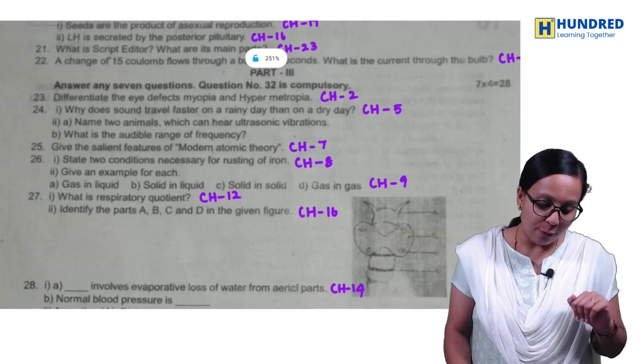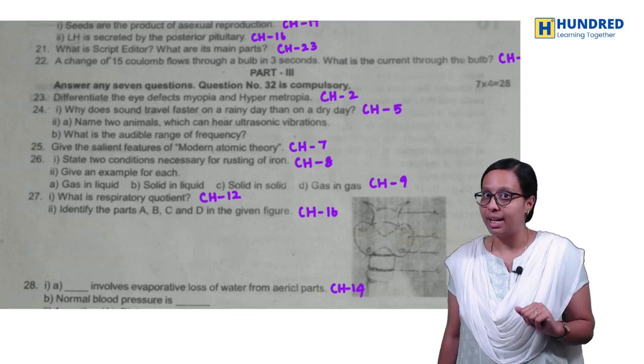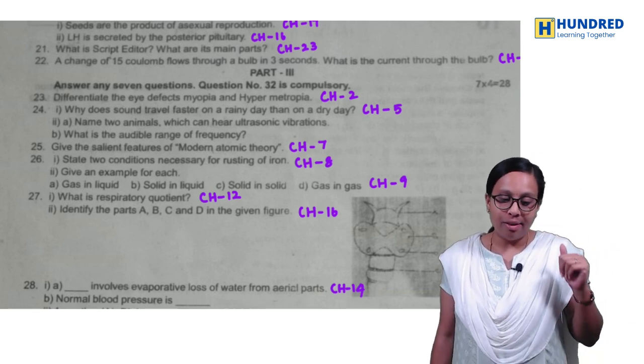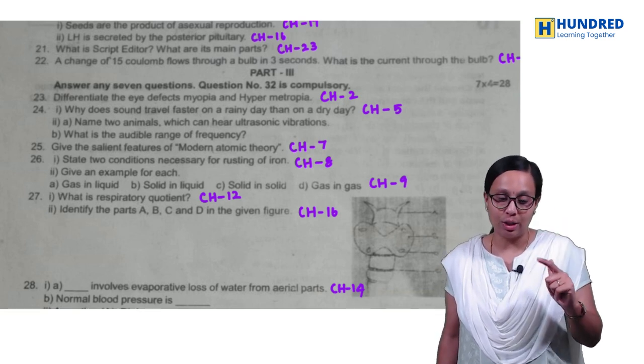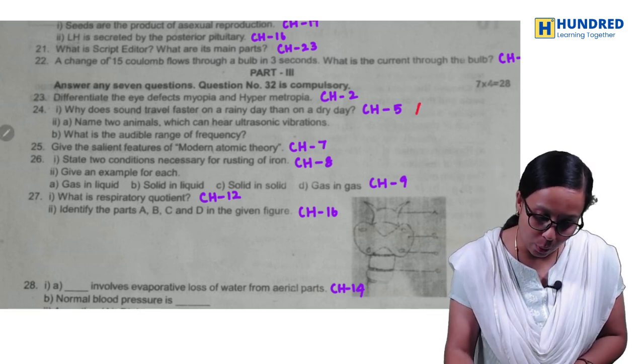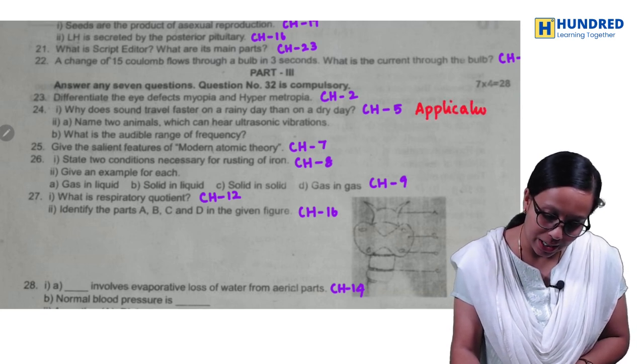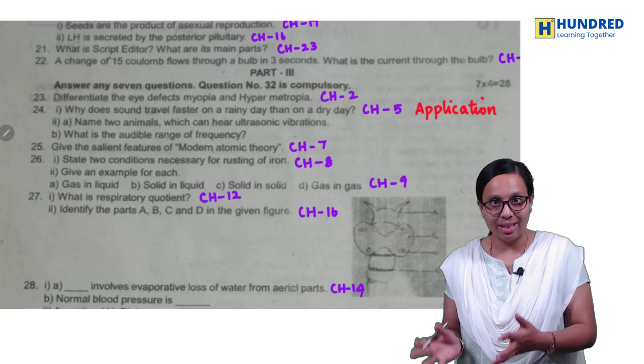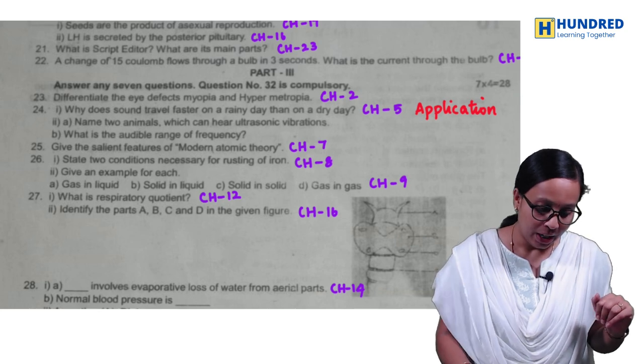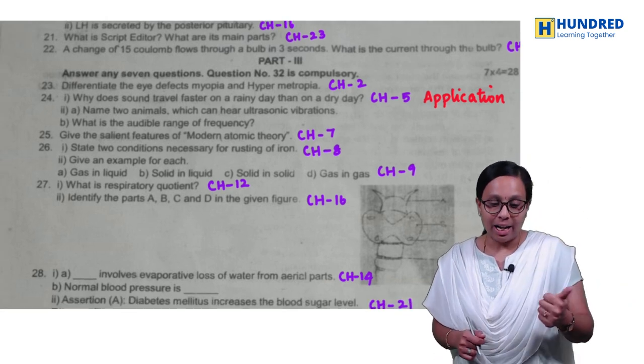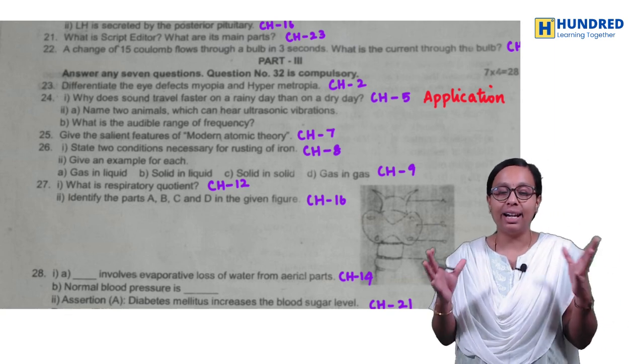So in part three, four marks, myopia, hypermetropia. This is the two districts repeated question. And then, why does a sound travel faster in a rainy day than on a dry day? Application based question. So I told you, application based question. So that is, application based question. Diagram based question. Electricity, compulsory problem. So more or less, same amount. Then, name two animals which can hear ultrasonic vibration. What is the audible range? So, human beings, what is the range? 20Hz to 20,000Hz. So, add a base.